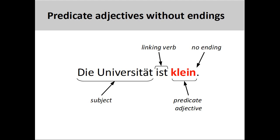German also has predicate adjectives. The sentence you see on the screen is a translation of the English sentence in the prior slide. As the adjective 'klein' appears after the linking verb, it is a predicate adjective modifying the subject of the sentence, 'die Universität.' It is important to note that predicate adjectives in German do not take any adjective endings.